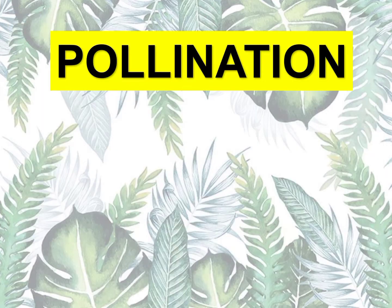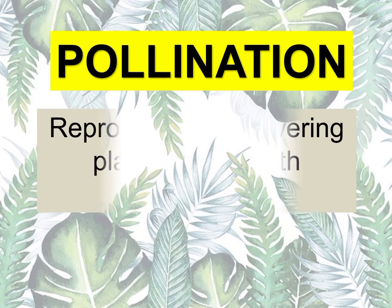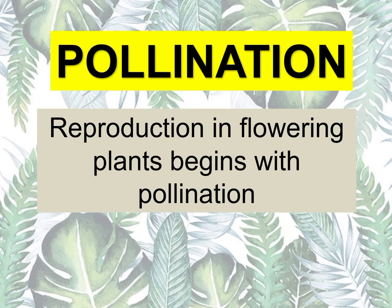Let's talk about pollination. Sa tao at sa hayop, kapag nag-meet ang egg cells at sperm cell, ang tawag natin dun ay fertilization. Sa halaman, we don't use the term fertilization. Instead, we're going to use the term pollination. Reproduction in flowering plants begins with pollination. Ang pollination ay nagaganap po kapag ang halaman ay angiosperms or meron siyang bulaklak, kasi merong sex cells doon, or merong reproductive parts.